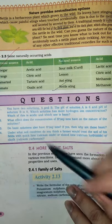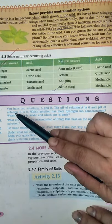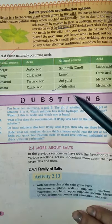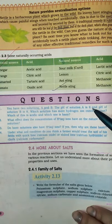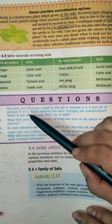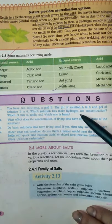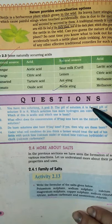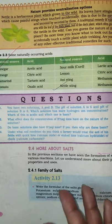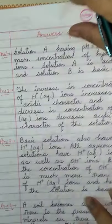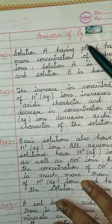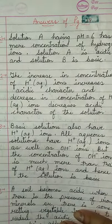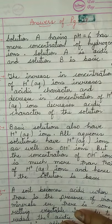Question number 1 of page number 28: you have 2 solutions A and B. The pH of solution A is 6, which means it is acidic, and B is 8, which is basic. Which solution has more hydrogen ion concentration? Definitely A will have more hydrogen ion concentration. Solution A having pH 6 is acidic whereas B is basic.